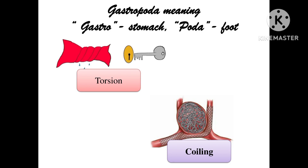In the gastropoda group of organisms, a very characteristic feature is torsion. Torsion and coiling are completely different — don't get confused between the two. I have shown a picture here for torsion and for coiling, so with the help of this image you can differentiate what is torsion and what is coiling. So let us now look at torsion, or twisting.